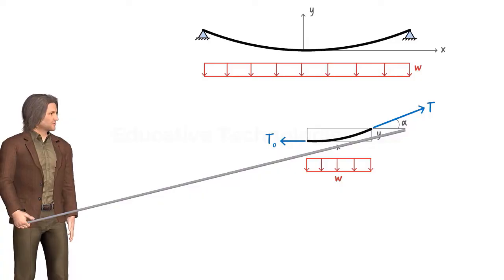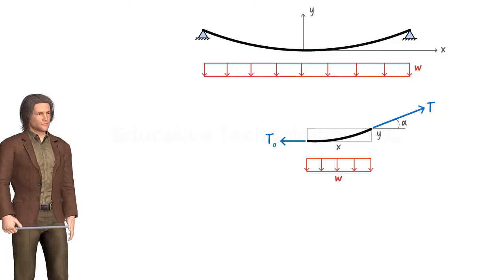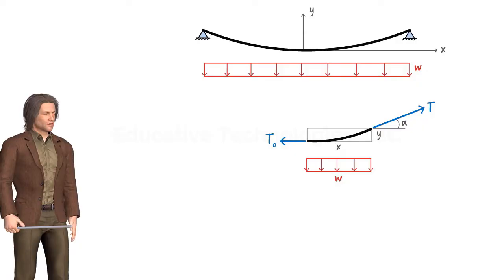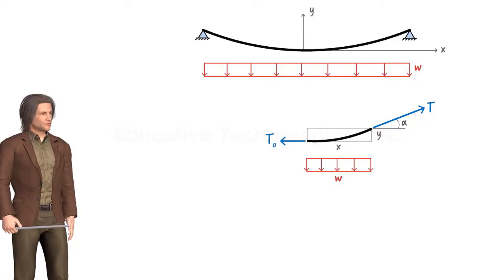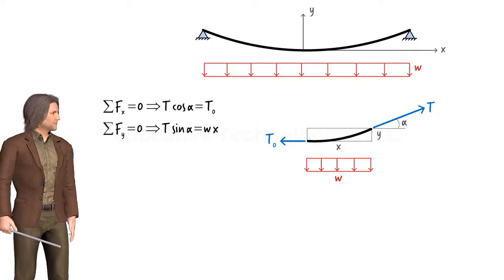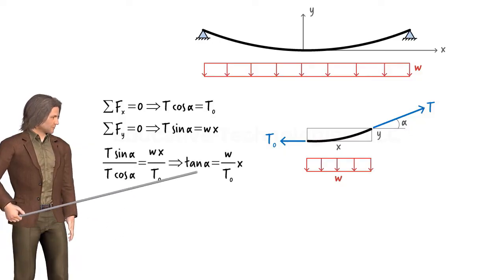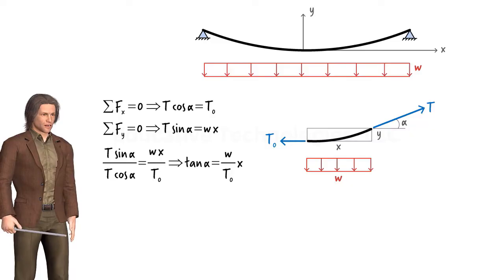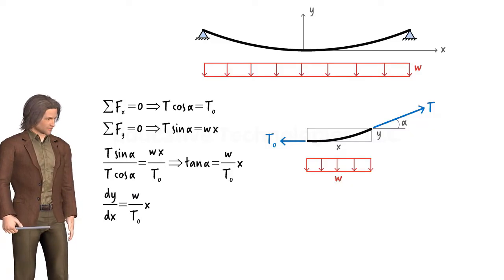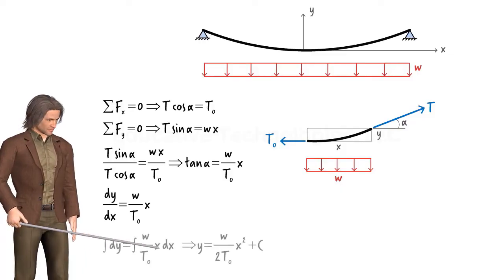We use alpha to denote the angle that the cable makes with the horizontal axis at its right end. Since the segment has to remain in equilibrium, the sum of the forces in the horizontal and vertical directions must be zero. Dividing the second equation by the first equation, we get tan(alpha) equals Wx over T0. Since tangent alpha can be expressed as the change in Y with respect to the change in X, we can write a differential equation that can be easily solved for Y, where C is the integration constant.